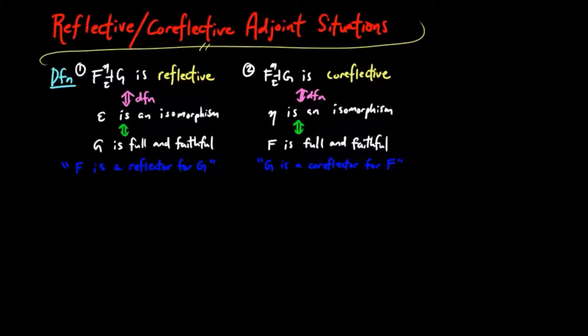Reflective, respectively co-reflective, adjoint situations are particularly well-behaved with respect to limit and co-limit constructions in the co-domain, respectively domain categories. Precisely,